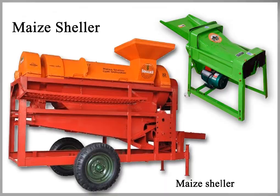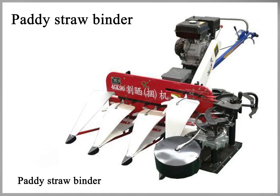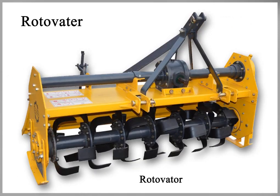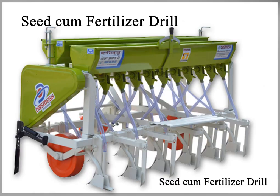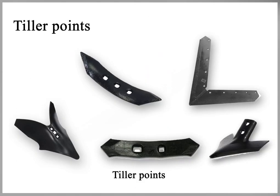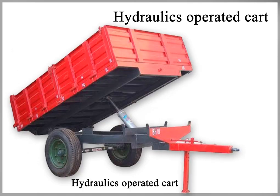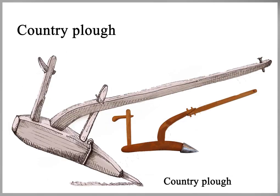Maize sheller, groundnut decorticator, paddy straw binder, rotavator, seed cum fertilizer drill, harvester tiller points, bullet cart, hydraulic operated trolley, country plow.